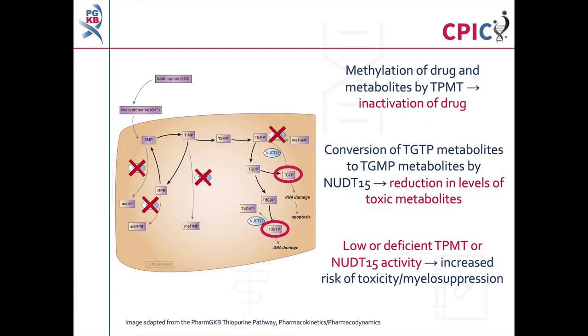If a patient has low or deficient NUDT15 activity, the levels of active thioguanine nucleotide metabolites are increased. This puts the patient at an increased risk of developing myelosuppression.